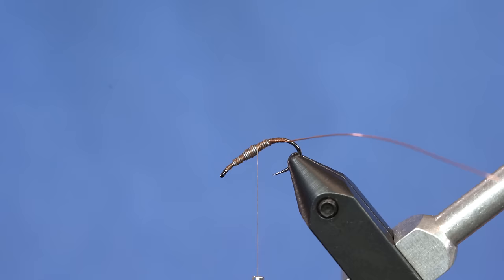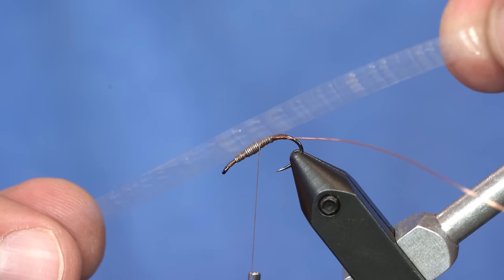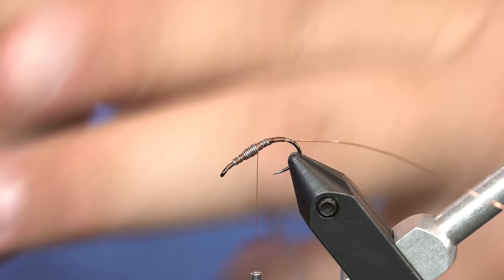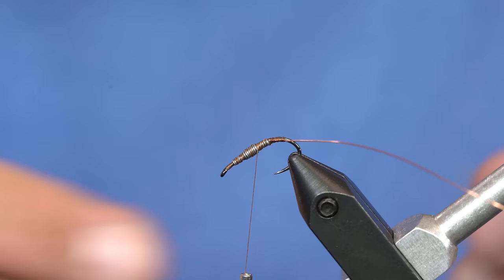So anyway, that's why we call this the garbage scud. Okay, so you can see that this has those, as Curtis calls them, striations, or little segments in the plastic, which kind of is a cool little feature of this garbage foam, as we're calling it.